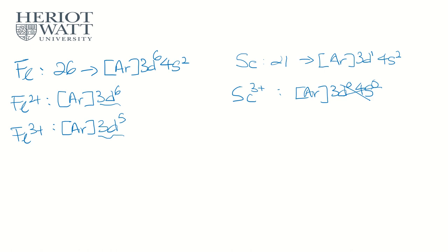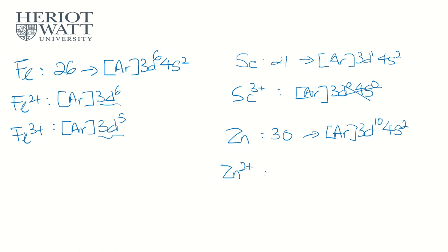Another example is zinc, proton number 30, with configuration [Ar] 4s2 3d10. The only ion zinc forms is Zn2+, with configuration [Ar] 3d10 — the d orbitals are not empty, but fully filled. For a transition metal, the d orbital must be partially filled, containing 1 to 9 electrons. It cannot be 0 or 10. So zinc is a d-block element but not a transition metal.